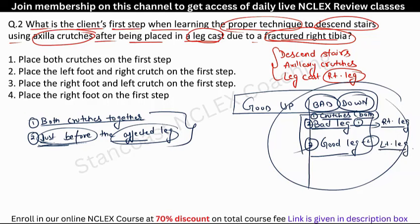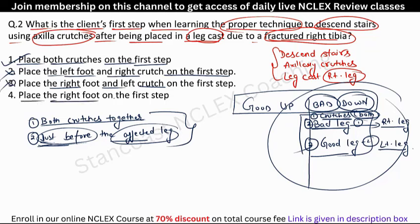Option four — place both crutches on the first step — is correct, as we have seen that both crutches must be placed in the first step during descending. The other options are incorrect because they do not follow the proper sequence of both crutches first.